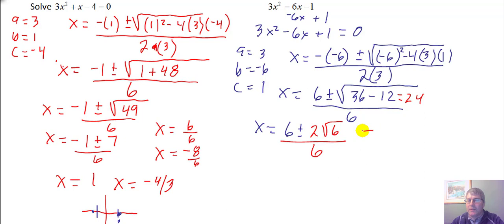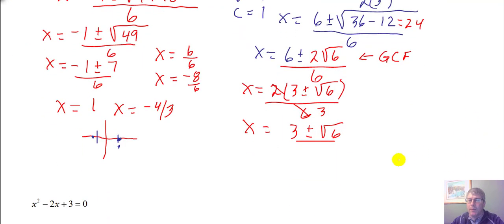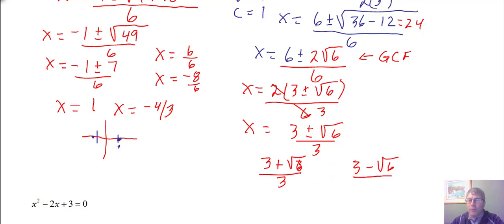I'll factor out the GCF in my numerator and get x equals 2 times the quantity 3 plus or minus the square root of 6, all over 6. Simplifying, x equals 3 plus or minus the square root of 6, all over 3. So our two x-intercepts are 3 plus the square root of 6 over 3, and 3 minus the square root of 6 over 3, which I can write as ordered pairs.